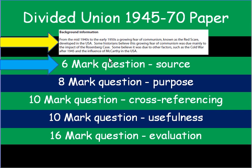So let's have a look at this example. The first thing I want you to do is open your paper and look at the background information. Make sure you read this little paragraph to give you some vital context. So from the mid-1940s to the early 1950s, a growing fear of communism, known as the Red Scare, developed in the USA. Some historians believe this growing fear of communism was due mainly to the impact of the Rosenberg case. Some believe it's due to other factors such as the Cold War after 1945 and the influence of McCarthy in the USA.